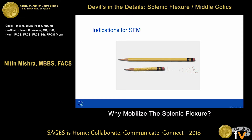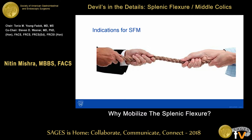This is where all the controversy started in terms of getting length. Some people thought it was something which could be overcome by surgical judgment, and others thought to make it routine and mobilize the flexure in every case. When you have length but the anatomy is dictating traction — two segments of colon tugging at each other — this is typically seen when doing a transverse colon resection with the hepatic flexure mobilized but the splenic flexure not. I would argue this is also an indication to mobilize the splenic flexure.